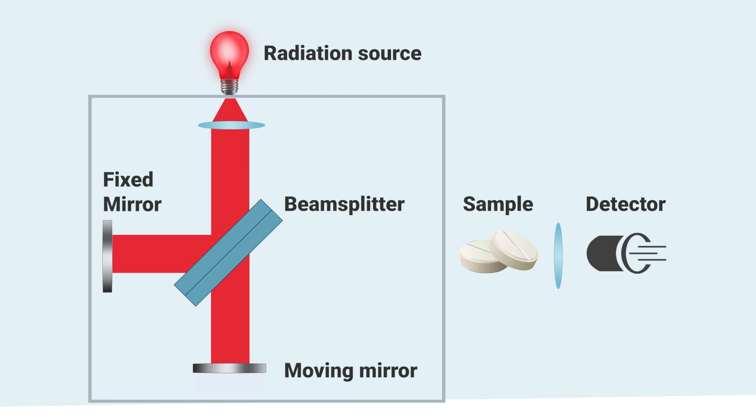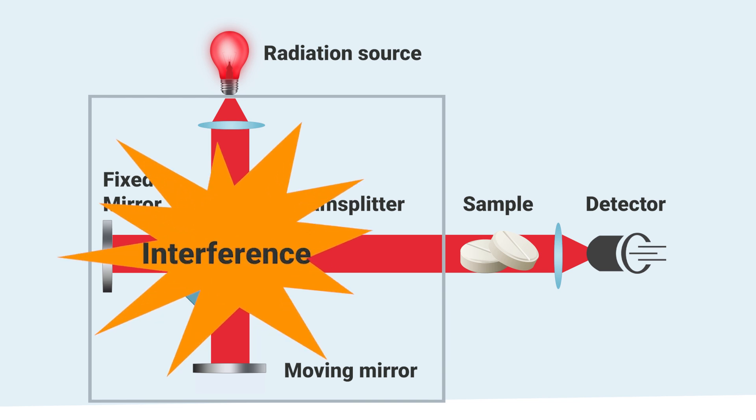This recombined beam is then directed at the sample, passes it, and is detected. The interference is the secret behind acquiring all IR information simultaneously. Now, to understand this better, we have to have a look at how light behaves.